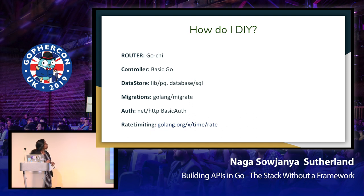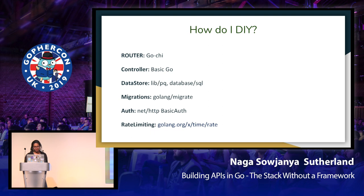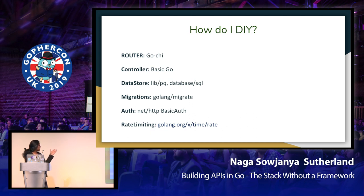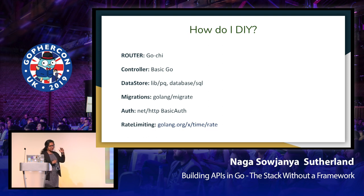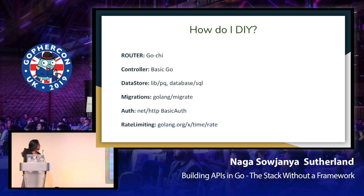How do I DIY? I would consider this the most important slide. For the router, I've chosen GoShi because it's very well-known and has amazing capabilities. For the controller, it's going to be a basic Go function. For the data store — Postgres — accessed through the database/sql package and the libpq Postgres driver. For migrations, I've used the golang-migrate package, which is forked from mattes/migrate. For authentication, I've used net/http BasicAuth, and for rate limiting, it's the rate package from the time package.